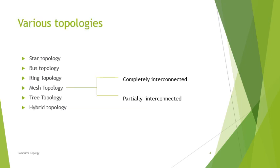The various computer network topologies are: Star topology, Bus topology, Ring topology, Mesh topology, Tree topology, and Hybrid topology. Mesh topology can be further categorized as completely interconnected mesh topology or partially interconnected topology.